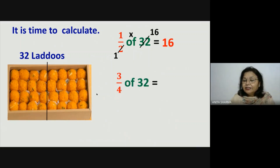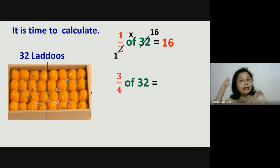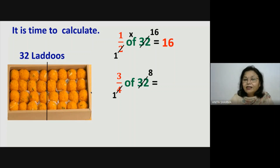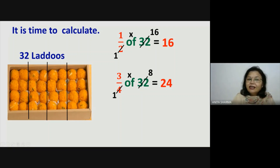Now if I say distribute 3 fourth of these laddus among your friends. You have to divide these 32 laddus in 4 equal parts. Understanding humare mind mein chalni chahiye — hum 4 parts mein divide karna hai. So 4 ones are 4 and 4 eights are 32, so hum 8 8 ke groups banayenge. Ab hamein lene hain 3 groups of 8, means 3 times 8 which is equal to 24. Means you will distribute 24 laddus among your friends. I have divided these laddus in 4 parts — 8 8 8 8 — and you are giving 3 parts, so 8 threes are 24.